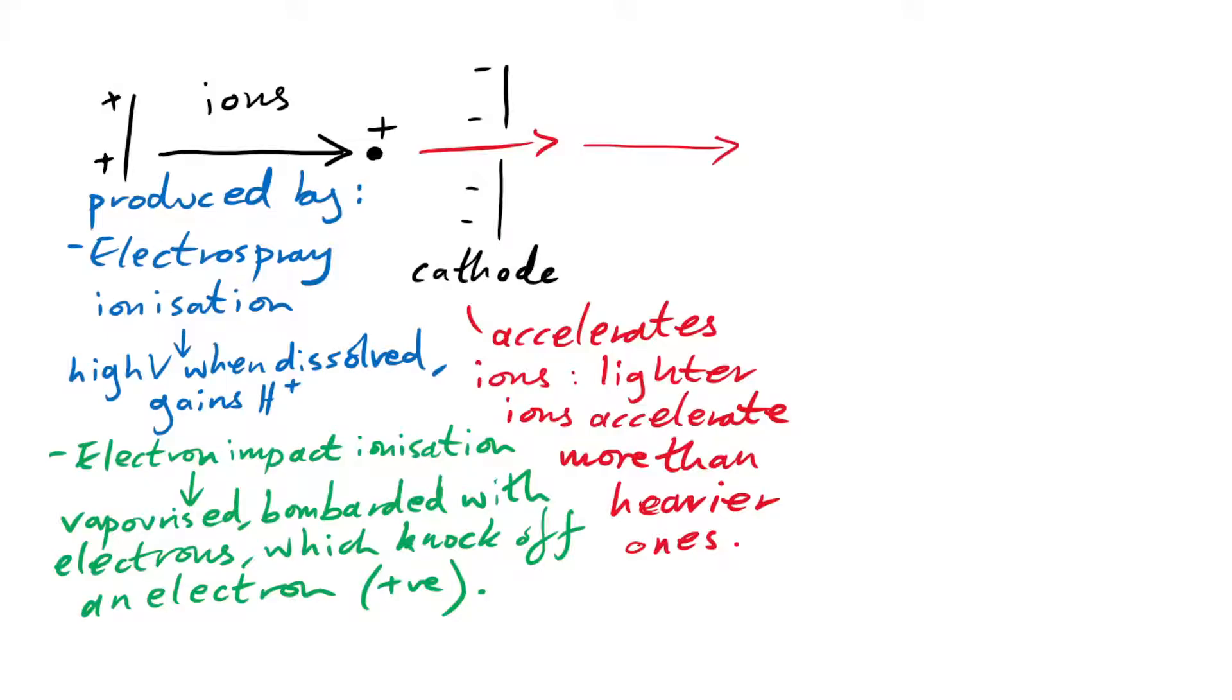And then these ions just drift through the mass spectrometer. Of course, this has to be a vacuum, doesn't it? Because we can't have these ions bombing into even gas particles that are there. So yes, this does have to be a vacuum. And then finally, we have our detector here.